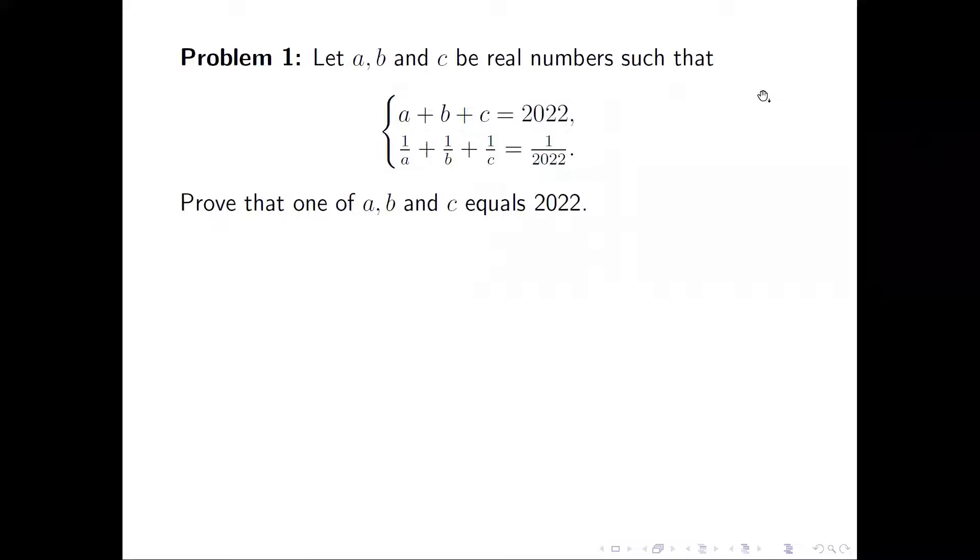Now let's solve the first problem. We have three variables with two equations. There are infinitely many solutions, but for all these solutions, one of the variables has to be 2022. From the second equality, we multiply all the denominators A, B, C, and 2022. We have 2022(BC + CA + AB) = ABC.